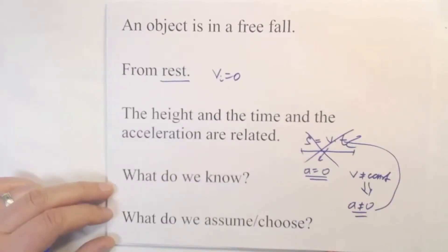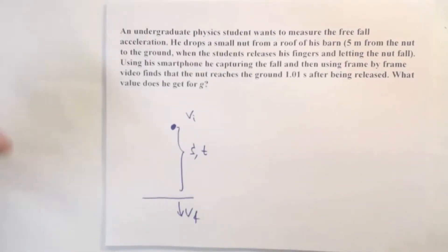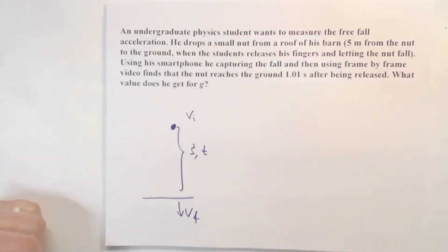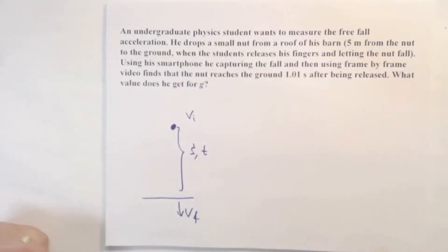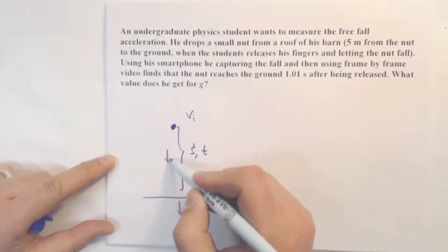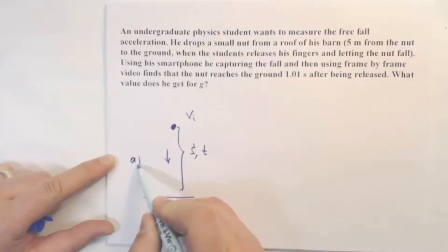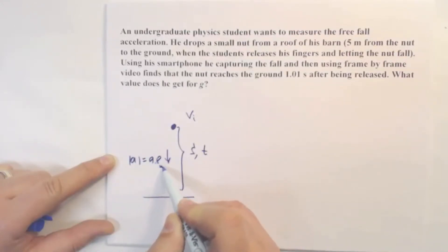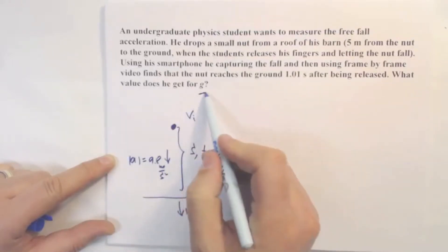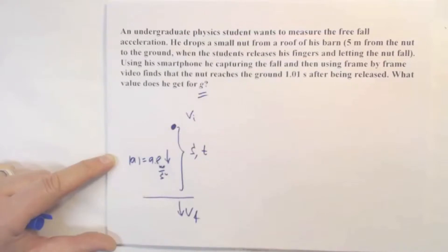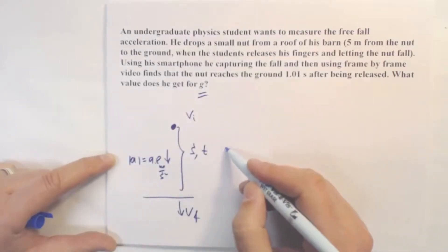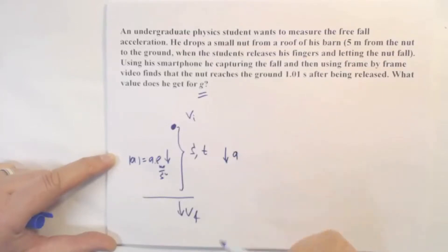Now we go back to our picture. If velocity changes, how does it change? We know that when any object falls down close to the surface of the earth, it falls with the same acceleration, which doesn't depend on the mass or shape of the object. Neglecting air friction, the acceleration has a magnitude of about 9.8 meters per second squared. In this problem we should calculate this number and see if the student gets a close result. We know the acceleration should point down.